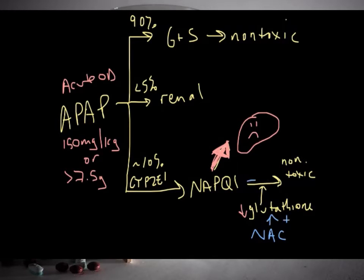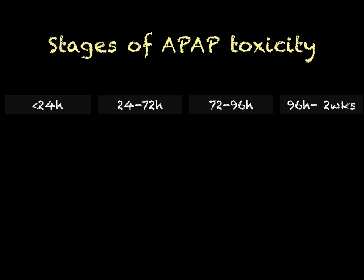What N-acetylcysteine does is replenish this glutathione supply, allowing our body to regain control of the available NAPQI and prevent it from causing any further damage. The symptomatology of acetaminophen toxicity, if untreated, comes in about four discrete phases.